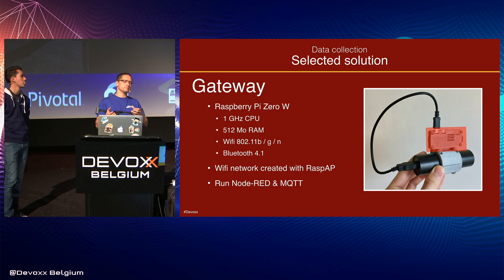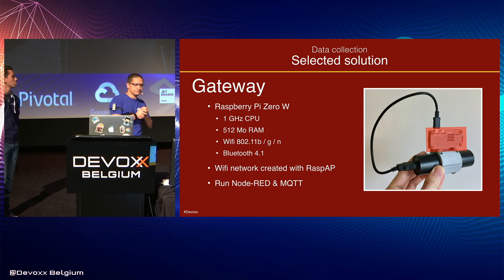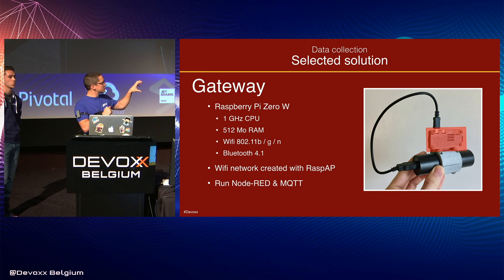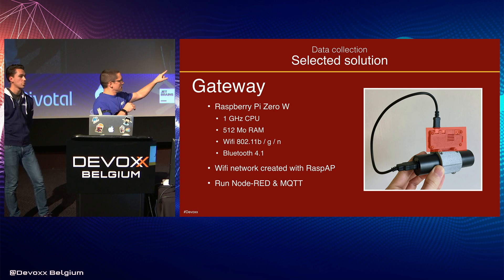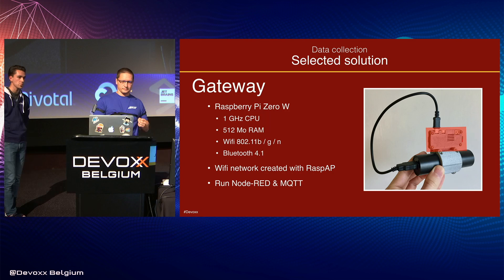We needed something wearable to run Node-RED and MQTT on the worker. We chose to build a gateway with a Raspberry Pi Zero — it has a one gigahertz CPU, which is enough to run Node-RED and MQTT. This Raspberry Pi allows us to create a Wi-Fi access point, and the sensors I'm wearing connect to this access point to push data into MQTT. The Raspberry Pi also has Bluetooth connectivity.